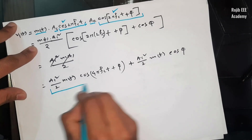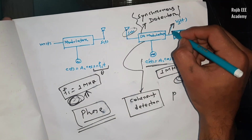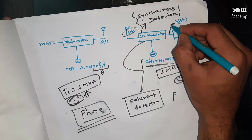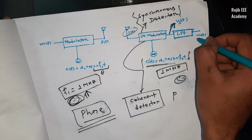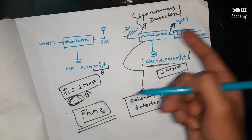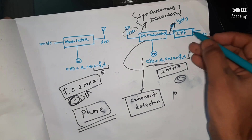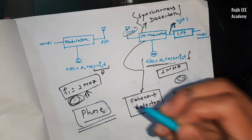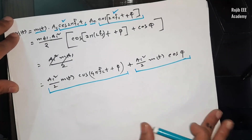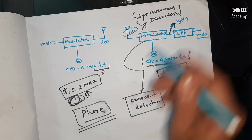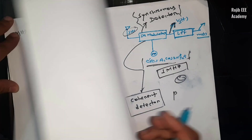Now we can see the two terms. One part is the high-frequency active term at 2fc, and one part is the low-frequency active term with cos(φ). So we have V1(θ). We can see that in the low pass filter, we can transmit the message signal to our friend. Our friend will be able to see it. If we have V1(θ), we can see that in the low pass filter and the output.